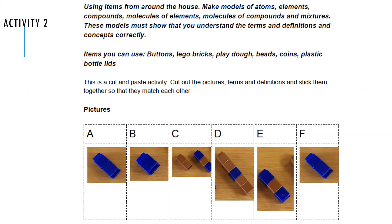In your Activity Number 2, listen carefully. Using items from around the house, make models of atoms, elements, compounds, molecules of elements, molecules of compounds, and mixtures. These models must show that you understand the terms and definitions and concepts correctly. Materials needed: you can choose buttons, lego bricks, play-doh, beads, coins, plastic bottle lids. Choose which materials you will use.